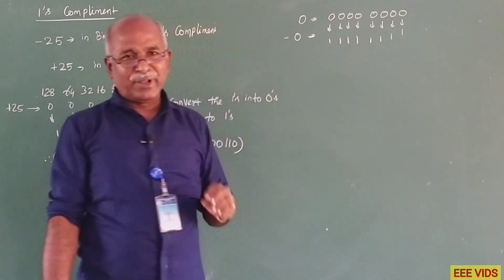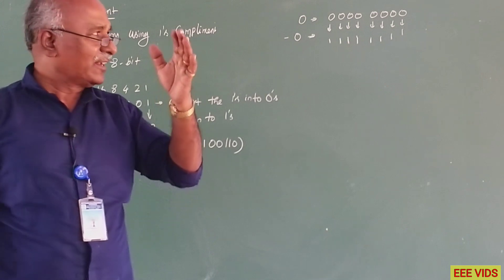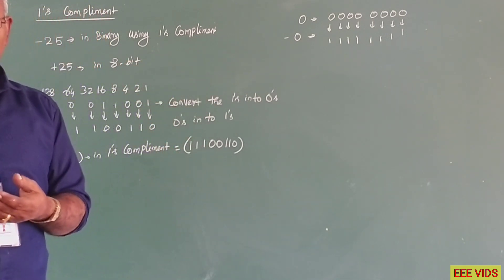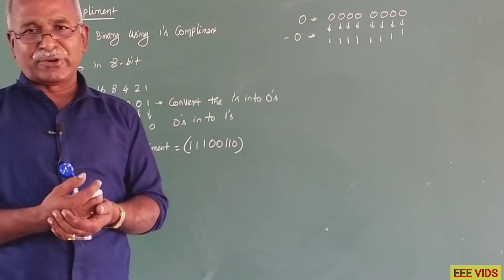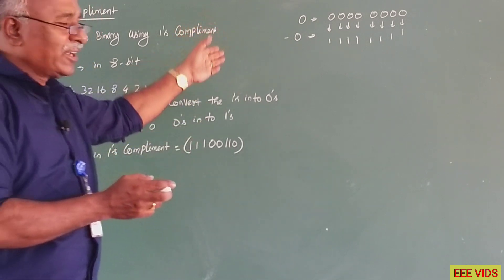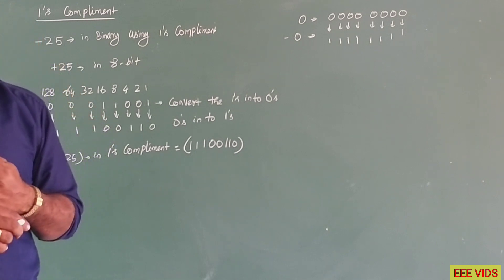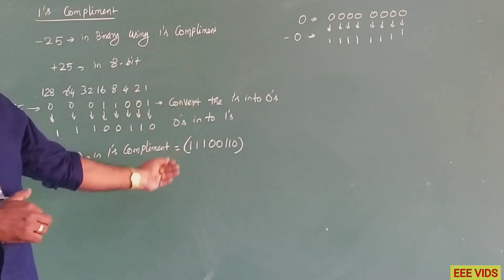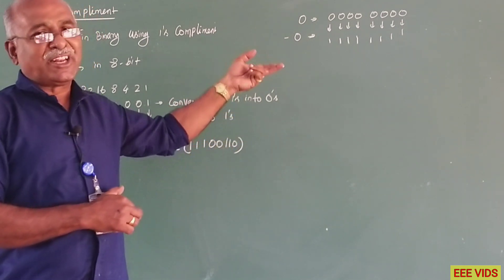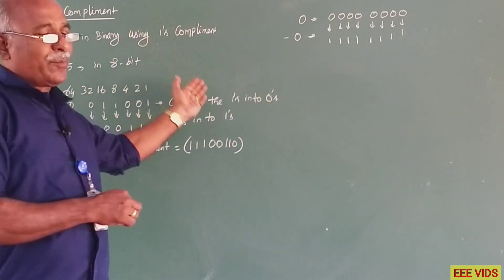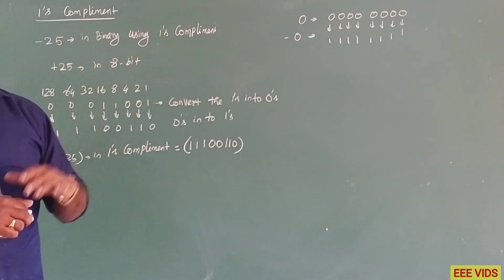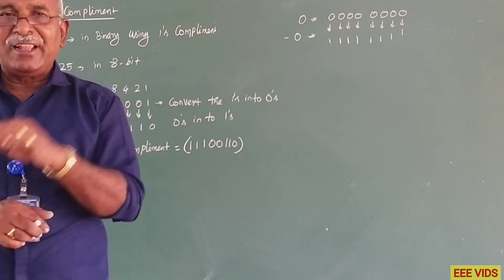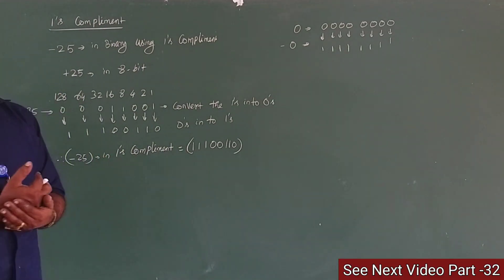Minus 0 is all 1s, and plus 0 is all 0s. So in 1's complement, 0 has two representations: minus 0 and plus 0. This method is not suitable — it's only for theoretical purposes. All digital devices use signed binary. Because of this dual-zero issue, 1's complement is not suitable for doing calculations in a machine. That is why we use the 2's complement method instead.